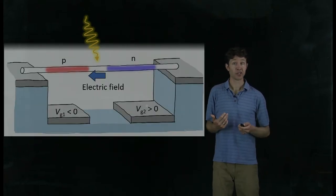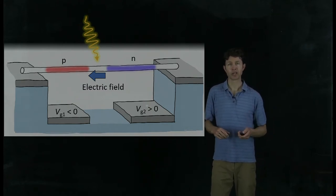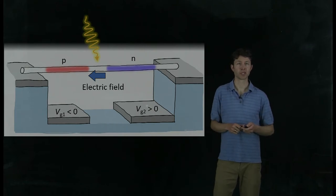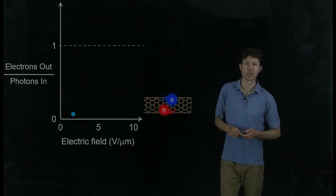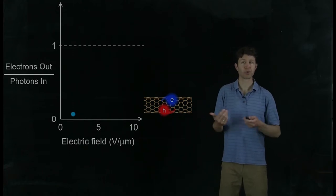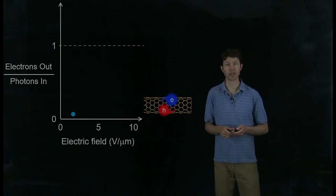In the cartoon version, it looks like this. It's a p-n junction with a strong electric field in the middle. And we're looking at how many electrons we get out of this device for every photon that gets absorbed. On the y-axis, I've drawn this ratio of electrons that we pull out for every photon that's absorbed by the nanotube. And on the x-axis, I've drawn the electric field that we're applying.